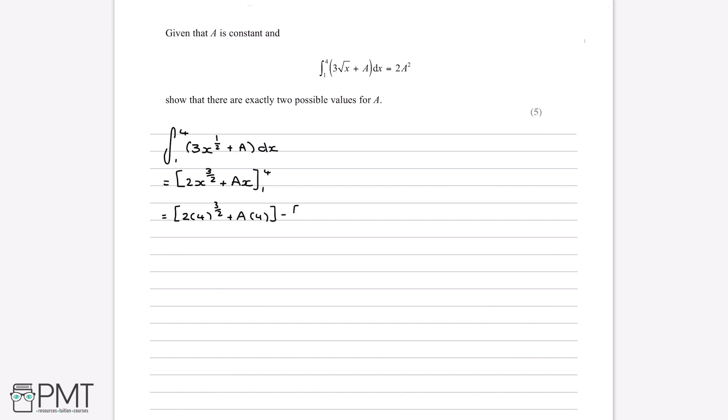And then this is take away the exact same thing, but we replace x with 1 instead of 4. And now, if we put some of these into our calculators, 2 multiplied by 4 to the power of 3 over 2 is 16.